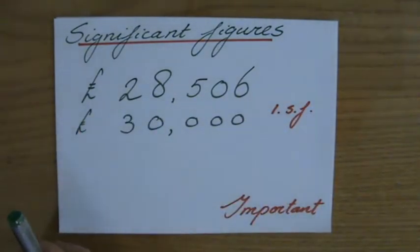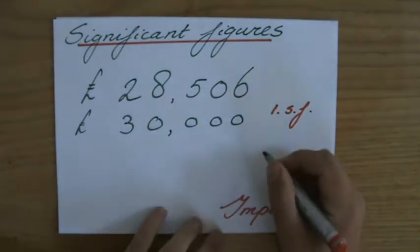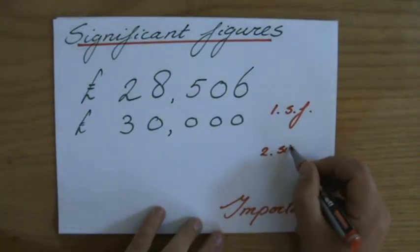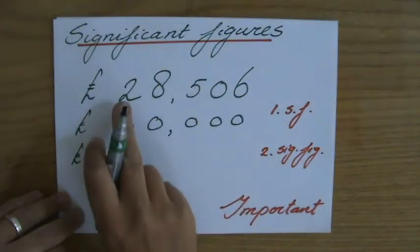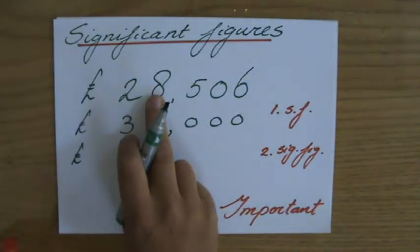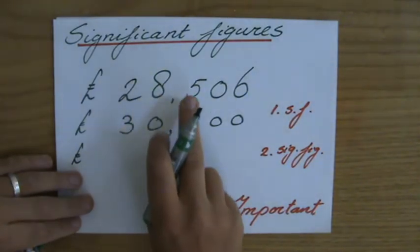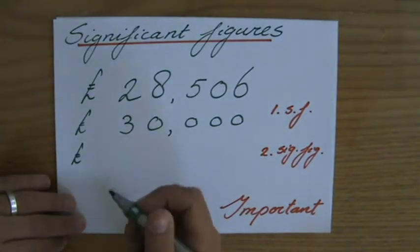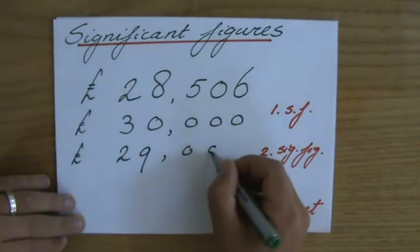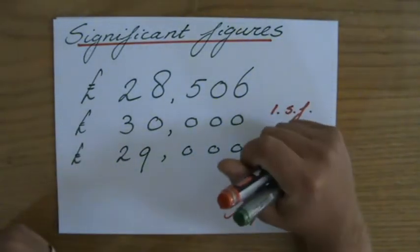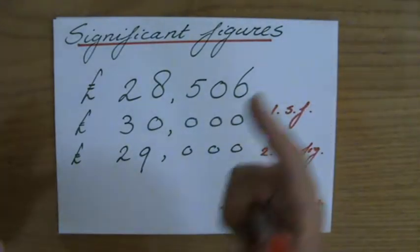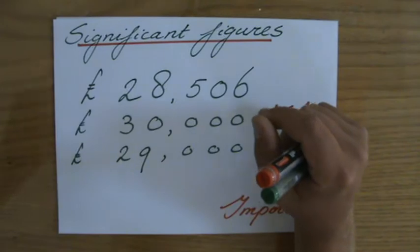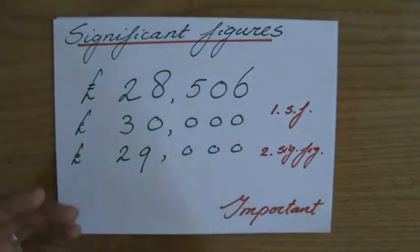Let's round 28,506 to two significant figures — sometimes written as 2SF. My second significant figure is the 8. Does it go up to a 9 or stay an 8? That depends on the next number — it's a 5 — so the 8 goes up. Rounded to two significant figures: 29,000. That's more accurate than 30,000, but if someone tells me 29,000, I think it could be 29,800 or 28,205 — roughly 29,000, but probably not exactly.